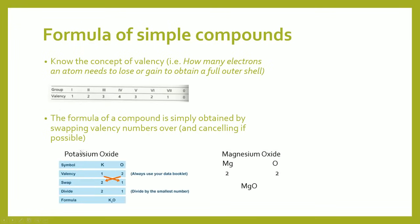For example, you have potassium oxide. You've got the valency of 1 for potassium and 2 for oxygen. You swap the numbers and what you get is K₂O — that is the formula for potassium oxide. For magnesium oxide, you have a valency of 2 for magnesium and also 2 for oxygen. You swap the numbers over, but in this case you can cancel it out, and if you can cancel you must cancel. What that leaves is MgO.